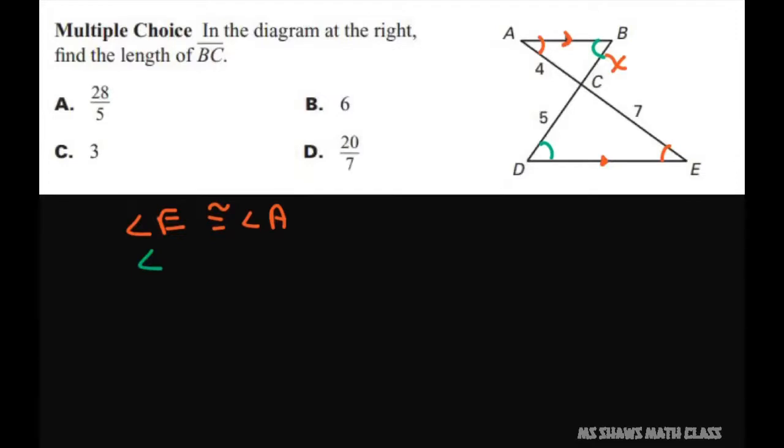So angle B is congruent to angle D, and we also know that due to the reflexive property, angle C is congruent to angle C.